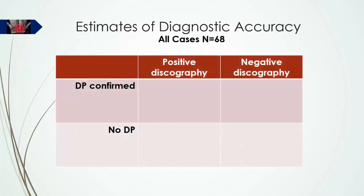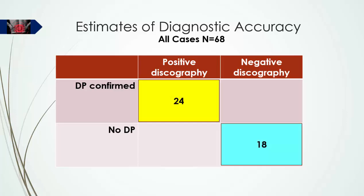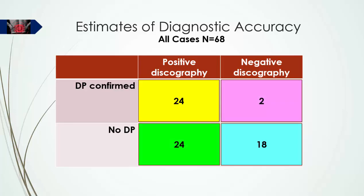Inserting the study data into the 2x2 contingency table, the true positive and true negative cells represent cases where the index test — directional preference — matches the results of the reference standard, provocation discography. The false positives and false negatives represent the errors. Overall diagnostic accuracy is the proportion of correct diagnoses out of the whole sample, calculated at 62% — better than random chance, but by no means perfect.